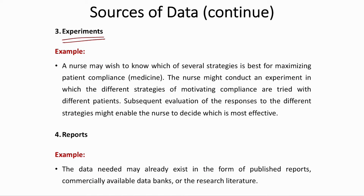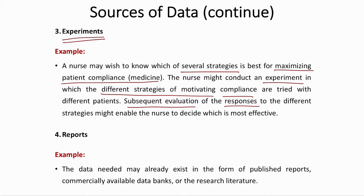The third source is experiments. For example, if a nurse wanted to know which strategy best maximizes patient compliance, she might conduct an experiment using different motivating strategies and evaluate the responses. In a drug trial, for instance, you could give half the participants the drug and half a placebo, then determine whether the drug produces the desired result. You conduct a randomized study where some people receive the drug and others do not, and observe whether those given the drug improve while the others deteriorate.